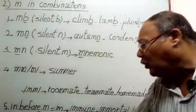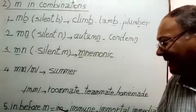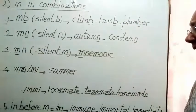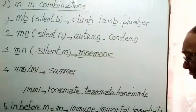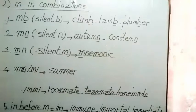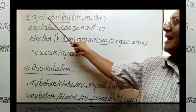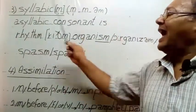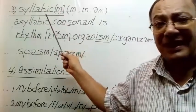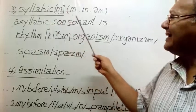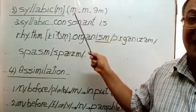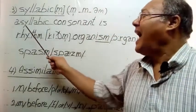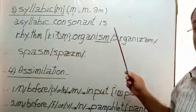N before M is M because of assimilation: immune, immortal, immediate. Syllabic M can be signified like these three different pronunciation samples. See, the consonant is: